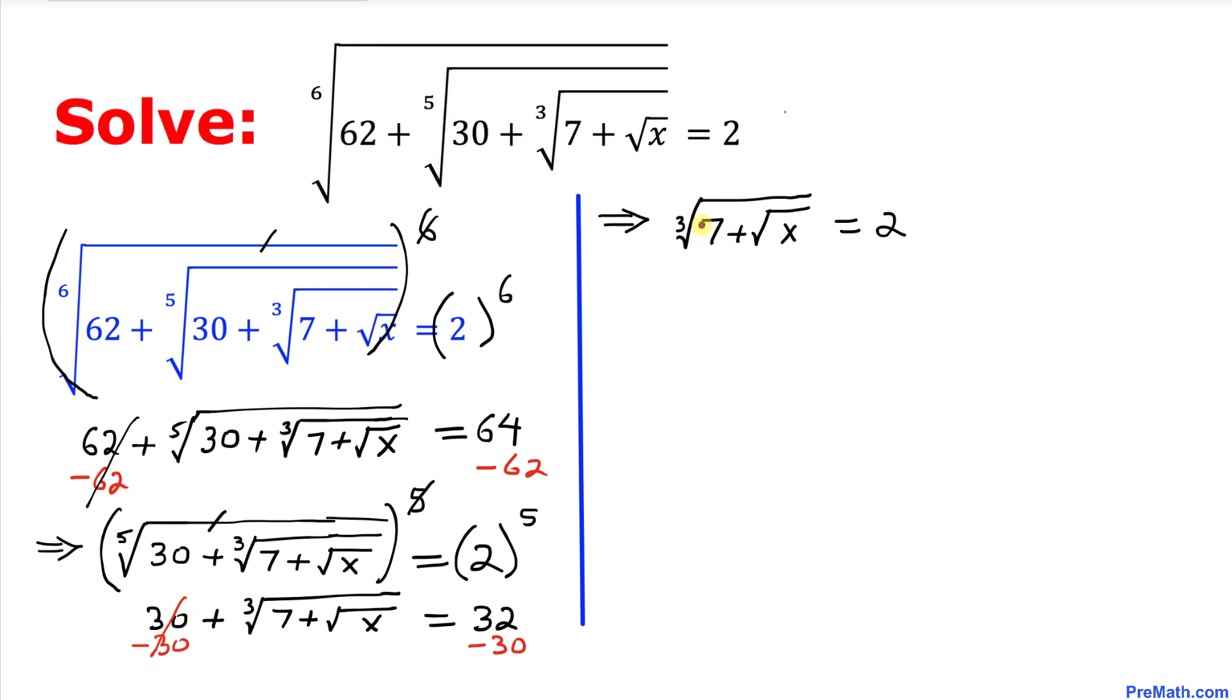So now we want to remove this cube root so we are going to take the power 3 on both sides. Let's do that one. So that means this cube and this cube root they undo each other. So we ended up with simply 7 plus square root of x equals to 8.